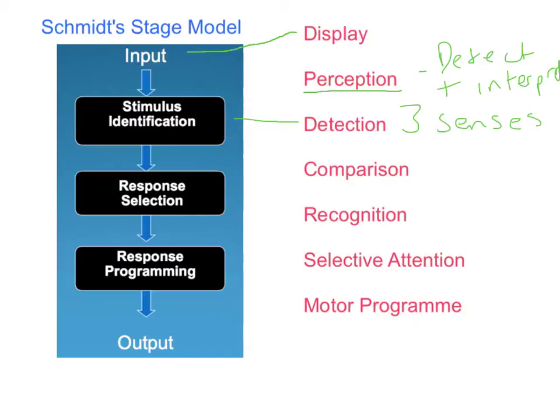The third sense, which is our internal source of information, is proprioception. That has three parts: touch, which concerns temperature, pressure, or pain; equilibrium, which is concerned with our balance; and kinesthesis, which looks at muscle feedback in terms of the position of our limbs and the feel of the movement.